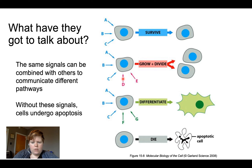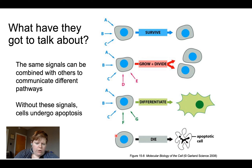Another population of cells might get the same A, B, C signals, but combined with F and G, they're told to differentiate — maybe into a skin cell or a heart cell. If we look at the bottom cell with no input coming in, a lack of these signals tells the cell to die. There's a process called apoptosis that leads to cell death. Different combinations of signals lead to different messages and different outcomes.